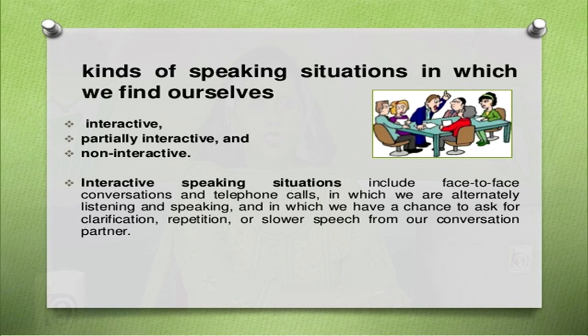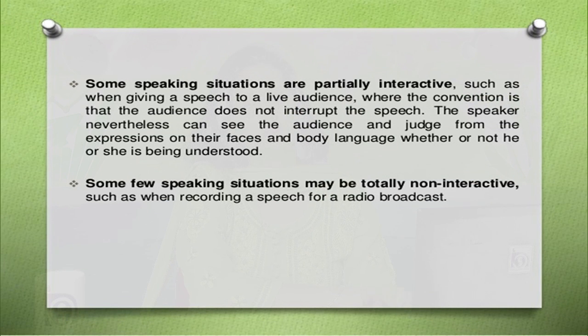Now, there are some kinds of speaking situations in which we find ourselves. The first is interactive, the second is partially interactive, and the third is non-interactive. Interactive speaking situations include face-to-face conversations and telephone calls, where we are alternately listening and speaking and have a chance to ask for clarification, repetition or slower speech. Some speaking situations are partially interactive, such as giving a speech to a live audience — the audience does not interrupt, but the speaker can see their faces and judge from expressions and body language whether they are being understood. Some few speaking situations may be totally non-interactive, such as when recording a speech for a radio broadcast.